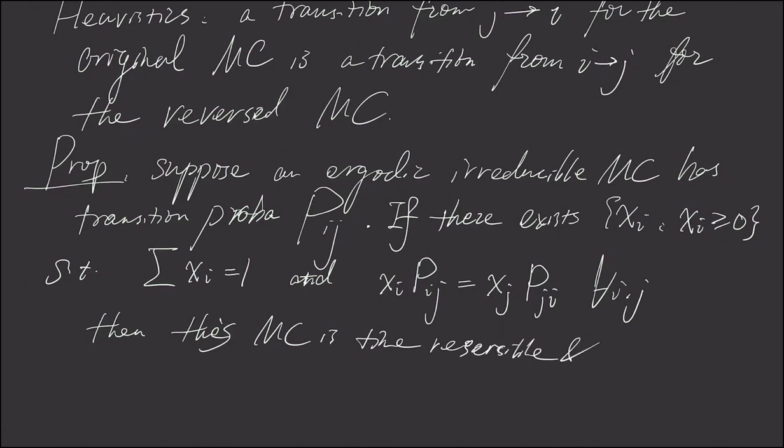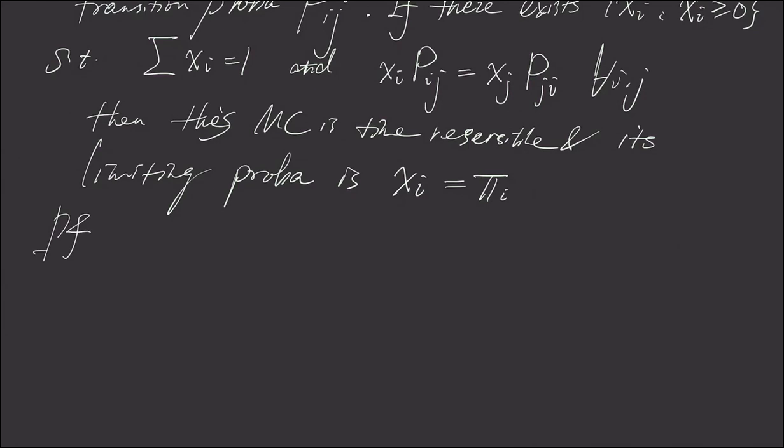And its limiting probability is x_i. Now let's see the proof. And by a theorem 4.1 which is π equals πP, if π satisfied this equation, π is our long-run proportion as well as stationary probability, given this Markov chain is not periodic.